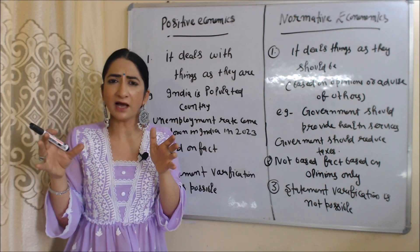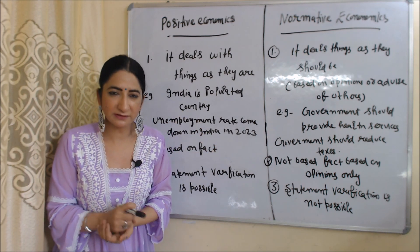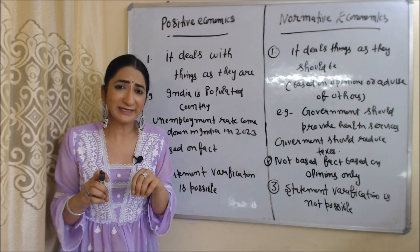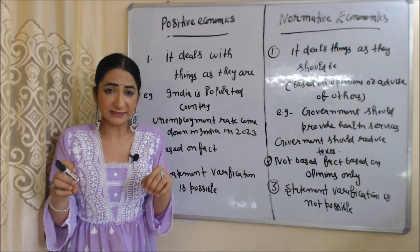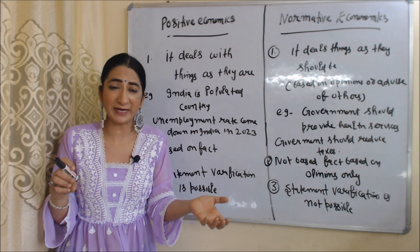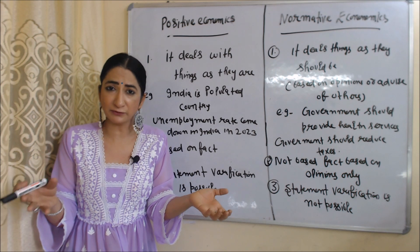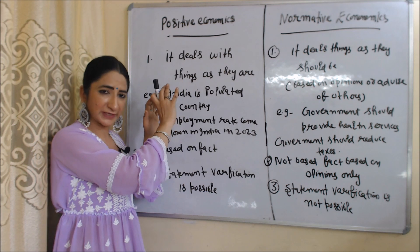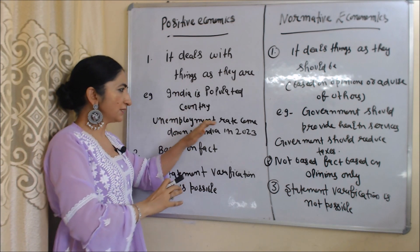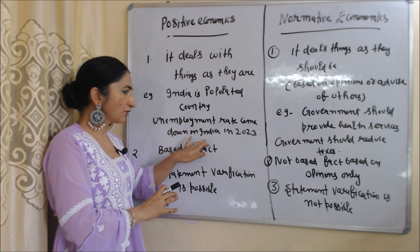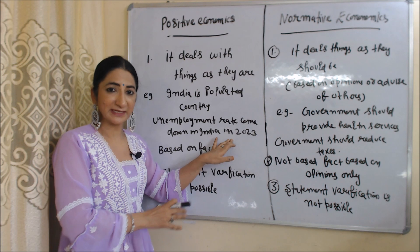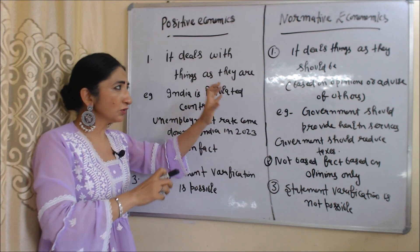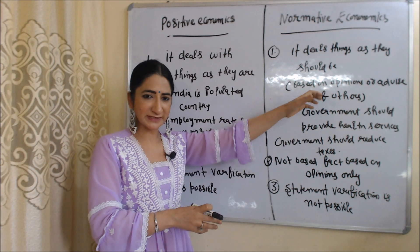Now we are going to talk about positive versus normative economics. Positive economics deals with things as they are — it describes the true situation of the present, past, and future of any economy. For example, statements like 'India is a populated country' or 'the unemployment rate came down in India in 2023' are examples of positive economics, as these statements are true about India.